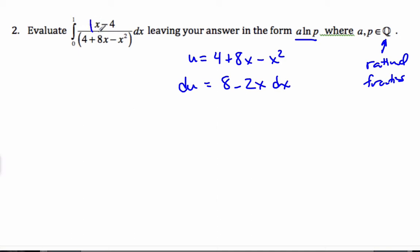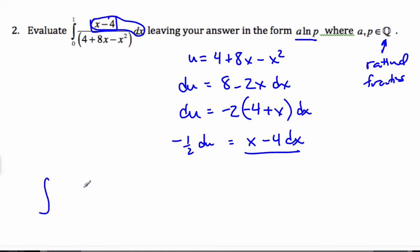The u-substitution is all about finding the inside function to differentiate, because you're looking for the chain rule component. If I look at this function, the more complex function, the derivative of it is 8 minus 2x, which is not quite that, but it's a multiple of that. So let us make our u equal to 4 plus 8x minus x squared. So I take the derivative, du is 8 minus 2x dx.